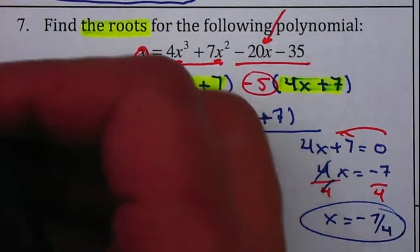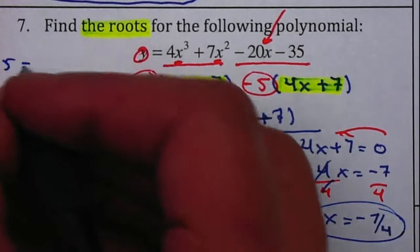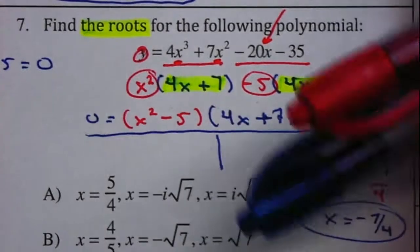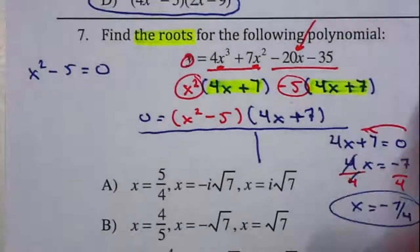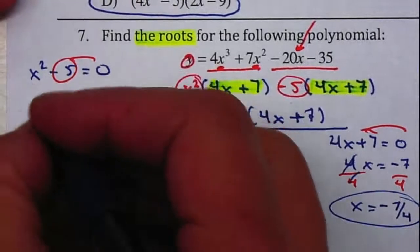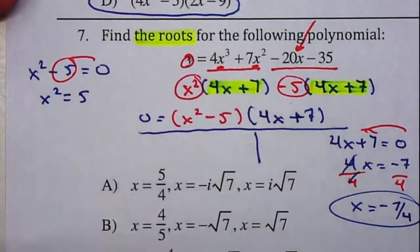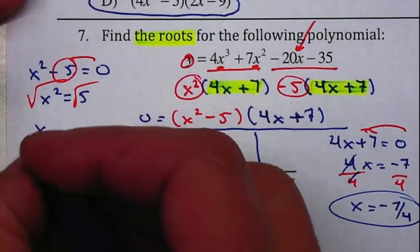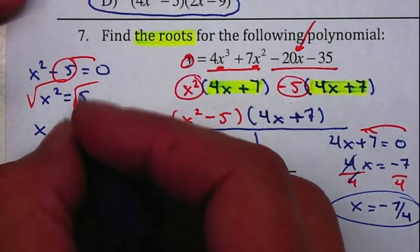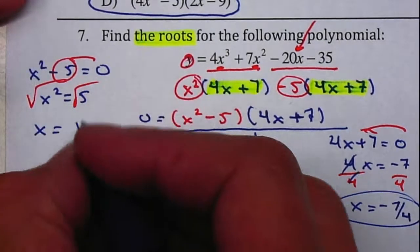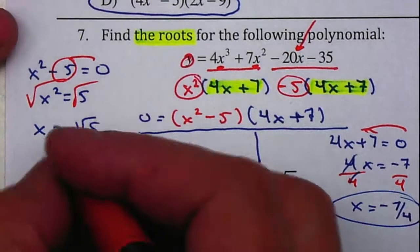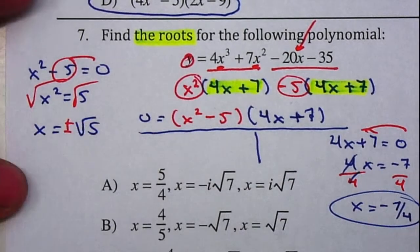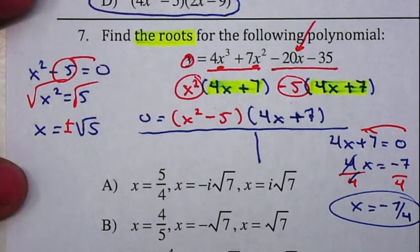And my other one will be x squared minus 5 equal to 0. I'm going to solve for x. I'm going to move the 5 to the right, becomes positive 5. I'm going to take the square root on both sides. So, therefore, x equals square root of 5, but we do have a plus or minus.